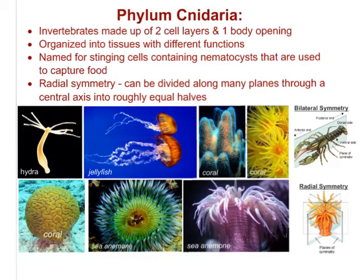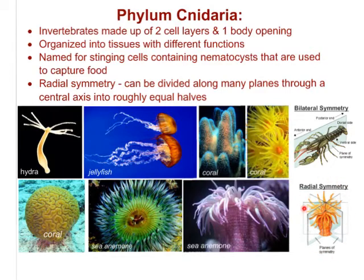Let's take a look at types of symmetry. There is asymmetry, which we discussed with the sponges. There are two kinds of symmetry: bilateral symmetry and radial symmetry. Bilateral symmetry is where you can divide an organism into a right and a left side. Radial symmetry, on the other hand, is where the organism can be divided along many different planes through the central axis into equal halves. You can see that there would be more than one way to divide it in half into mirror images. Cnidaria all have this radial symmetry. Examples include hydra, jellyfish, different kinds of corals, and sea anemones.